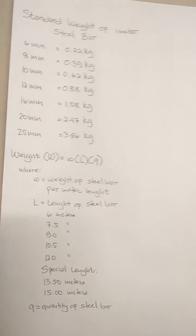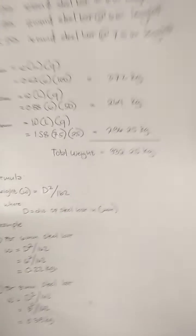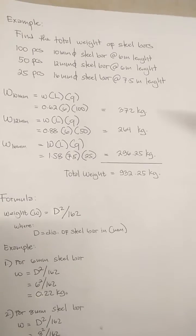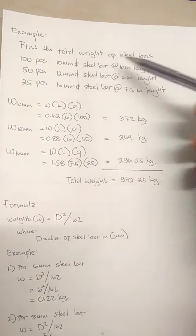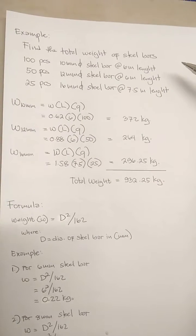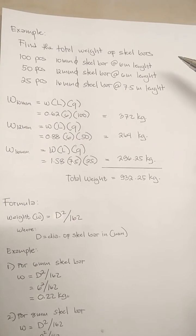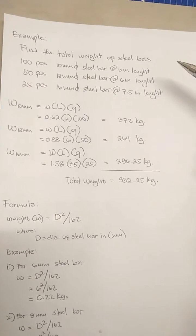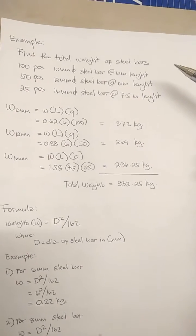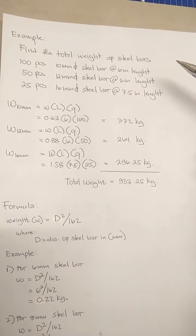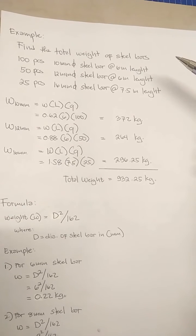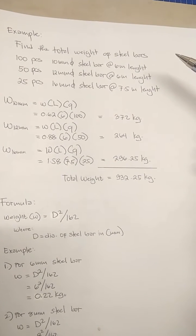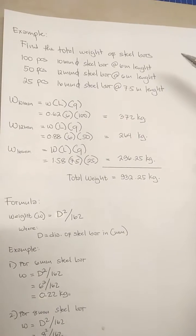I have here an example problem so that we will know how to compute the weight of steel. Find the total weight of the steel bars for: 100 pieces of 10mm diameter steel bar at 6 meter length; 50 pieces of 12mm diameter steel bar at 6 meter length; and 25 pieces of 16mm diameter steel bar at 7.5 meter length.